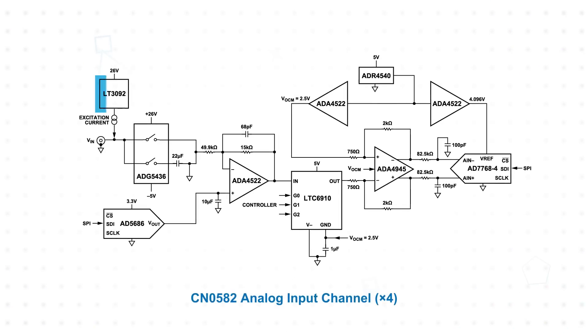Each channel includes an LT3092 to provide the constant current source while maintaining a 24 to 30 volt compliance voltage. The input can be switched to AC or DC coupled using the ADG5436.